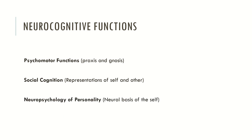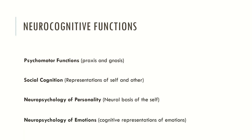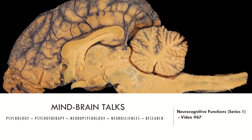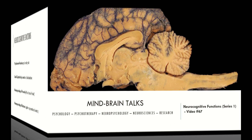I have also included a domain called neuropsychology of personality, where I will talk about the neuronal bases of the self. Basically, I will describe some research focused on the neurobiological basis of personality traits. The last domain is the neuropsychology of emotions, which mainly concerns the cognitive representation and cognitive description of emotions. These are the main neurocognitive functions that will be described in future videos.